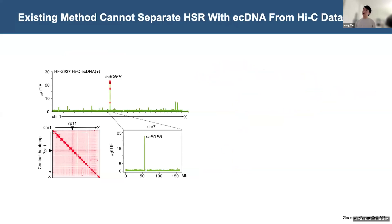I want to focus on ecDNA because it has a very obvious stripe pattern across the genome on the Hi-C contact map, indicating that its interactions are very global and prevalent. Based on this feature, a previous study has calculated metrics including the copy-number-normalized trans-interaction frequency that can be used to detect ecDNA from Hi-C data compared to normal cell lines.